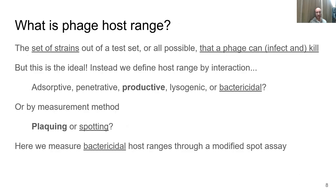That being said, it's important to define host range and understand its limitations. Phage host range ideally is the set of strains that a phage can infect and kill. But host range tends to be defined by interaction or measurement method. It could be defined based on adsorption — just the ability of the phage to attach to the cell; penetration, to deliver its DNA; infection or productive host range, whether phages could infect a cell and kill it and produce new progeny; or lysogenic host range, based on the ability to integrate into the chromosome.